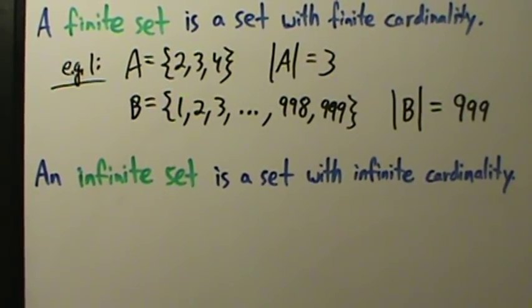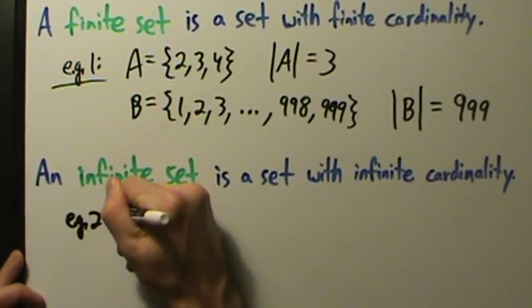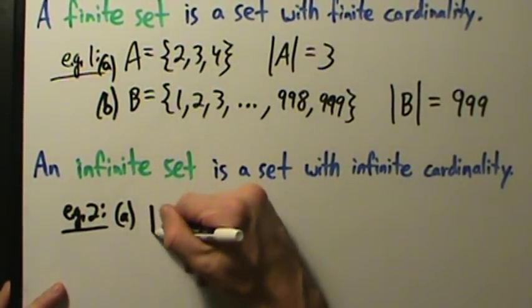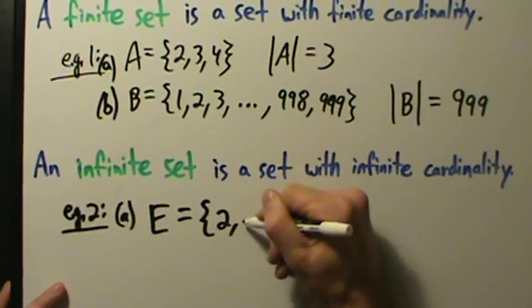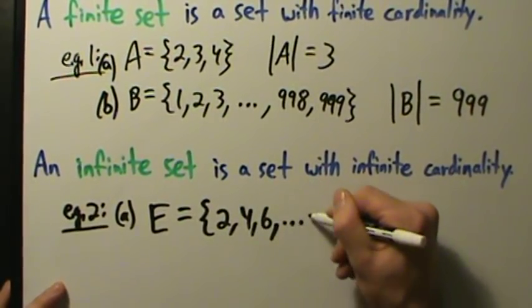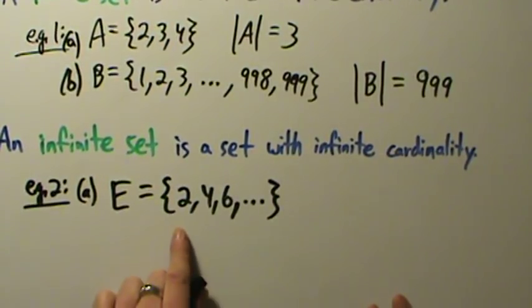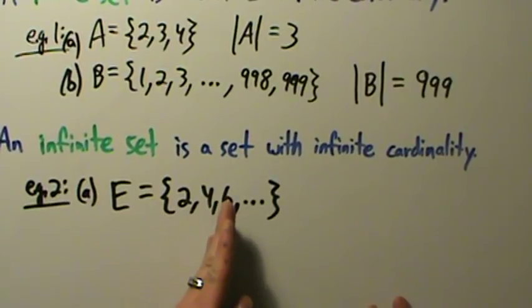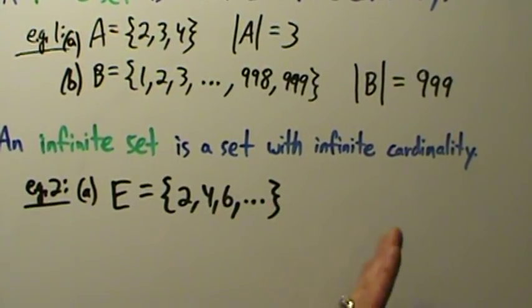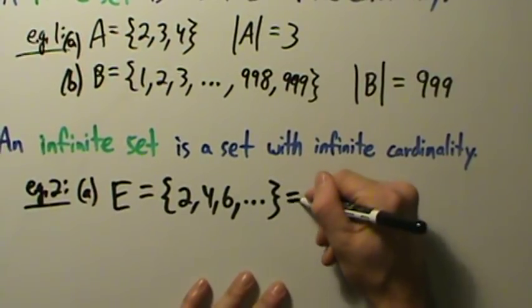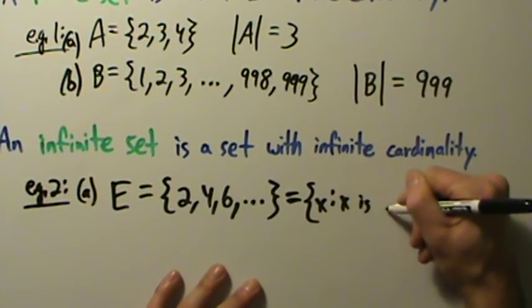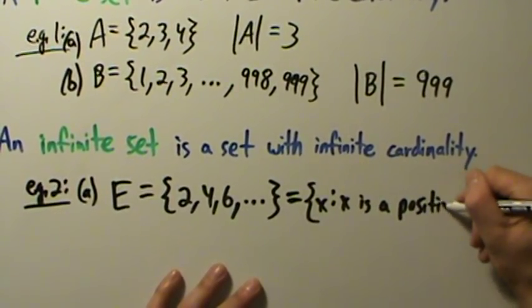Example two, part A: let's say we have set E = {2, 4, 6, ...}. The dot-dot-dot means continue the pattern — 2, 4, 6, then 8, 10, 12, 14, 16, 18, and so on. In set builder notation, that would be: X such that X is a positive even number. So variable name, colon meaning 'such that,' and the defining property.